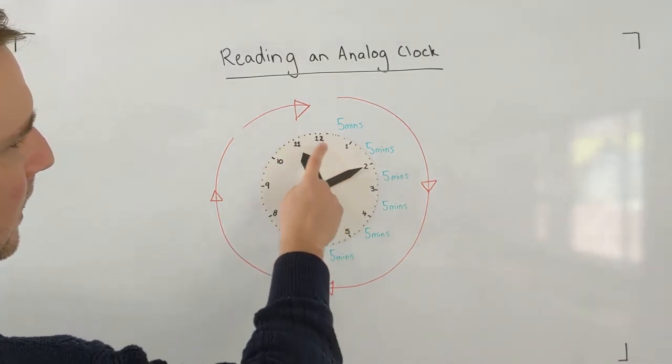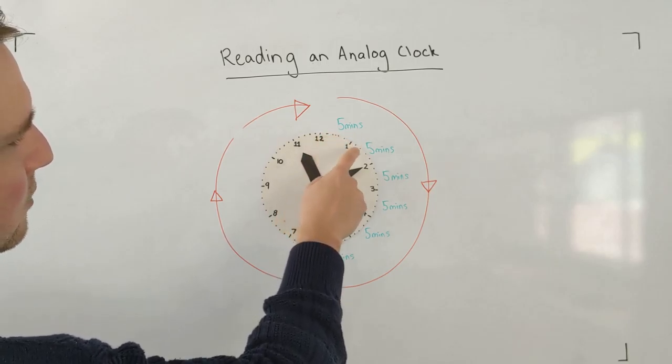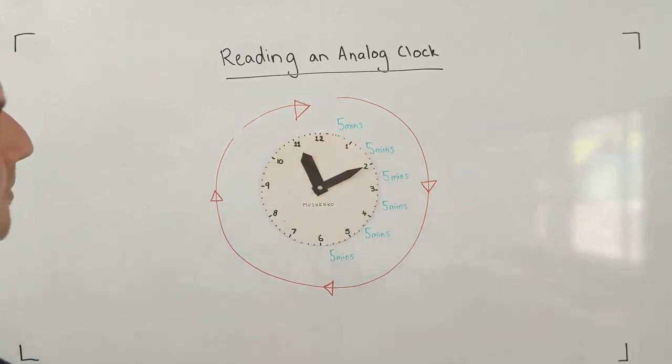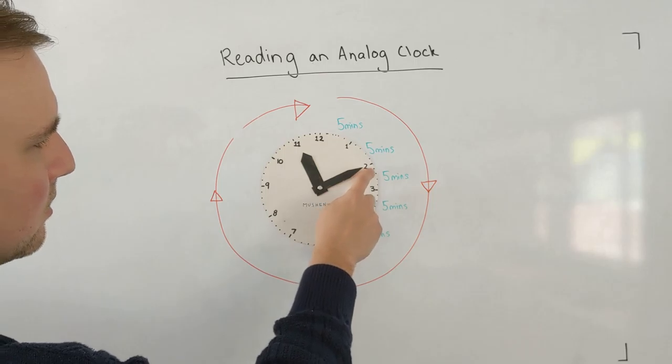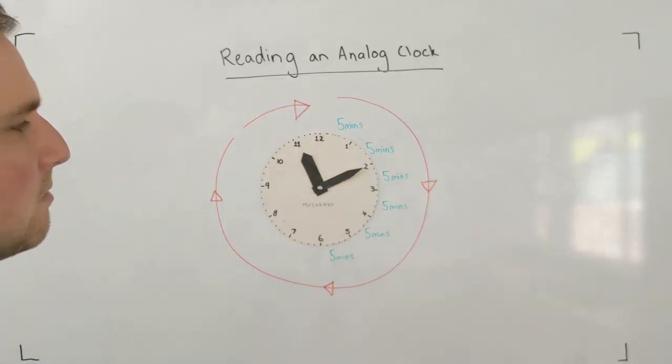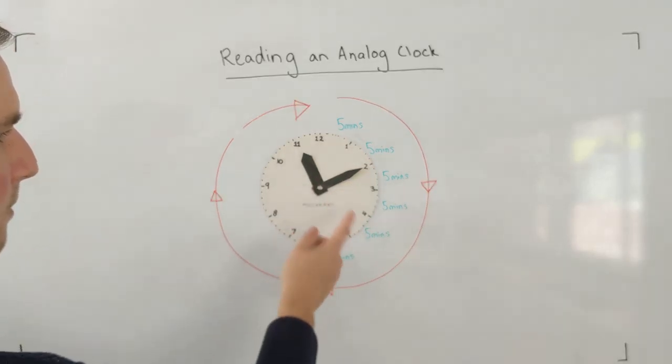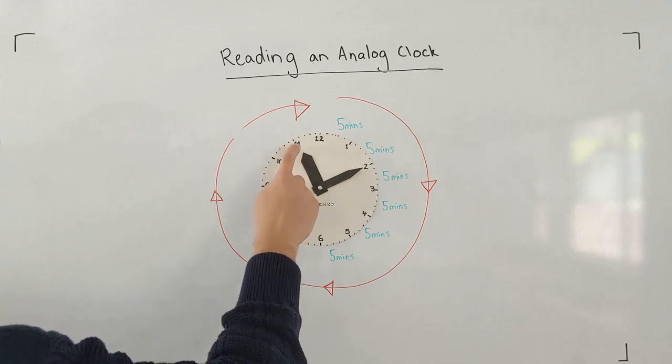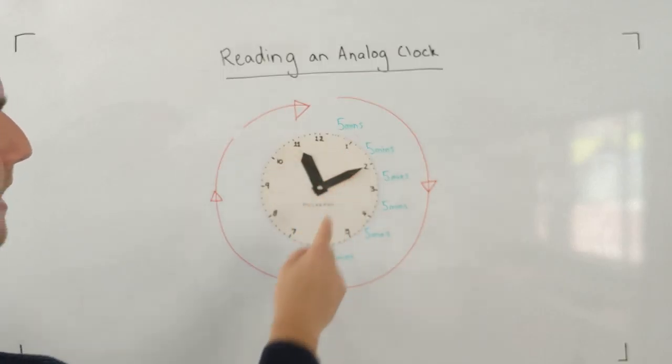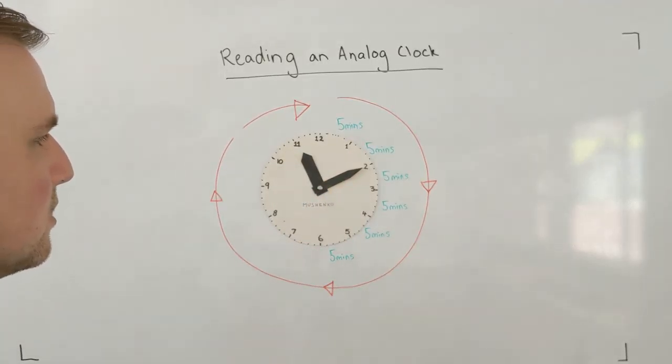The minute hand has travelled one, two chunks of five minutes. So 10 minutes total. It's telling us that it's 10 minutes past the hour. What's the hour? We already know that. It's 11. So it's 11:10 is the time that this clock is showing us.